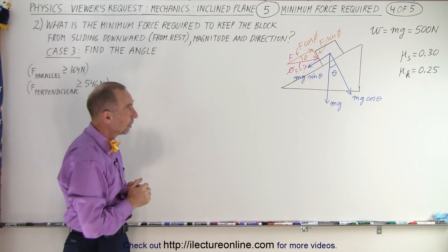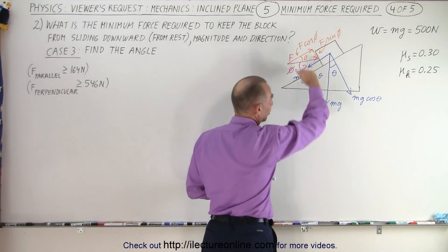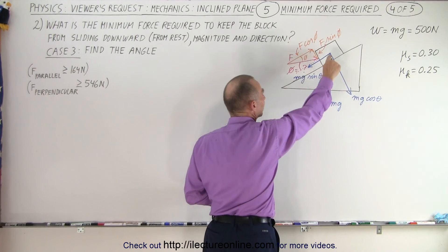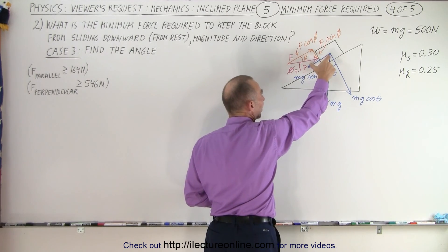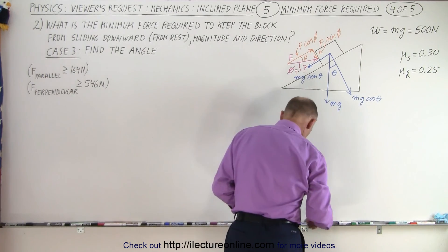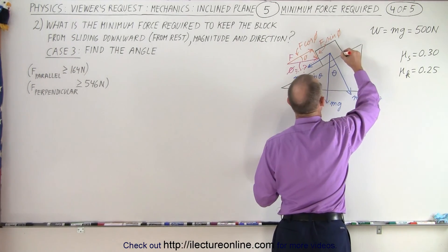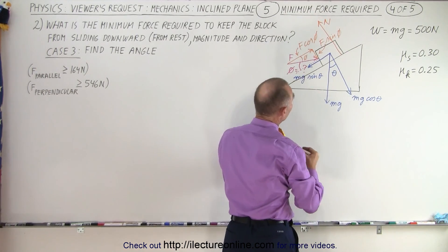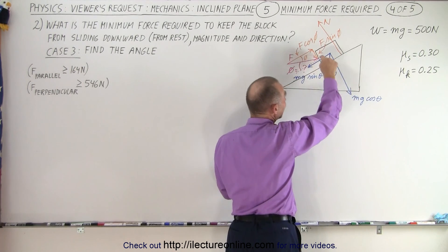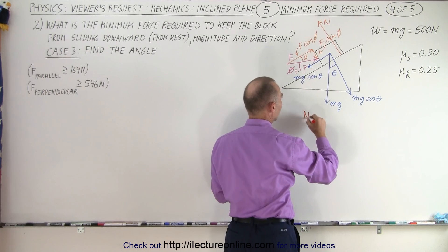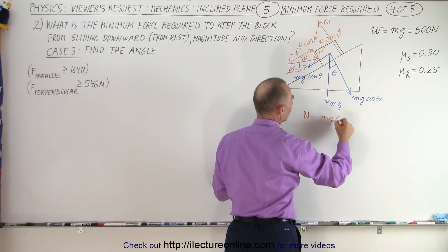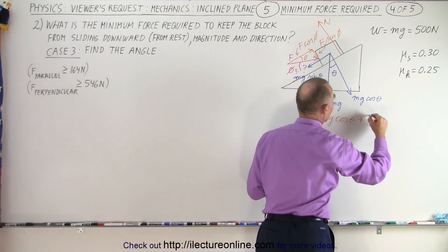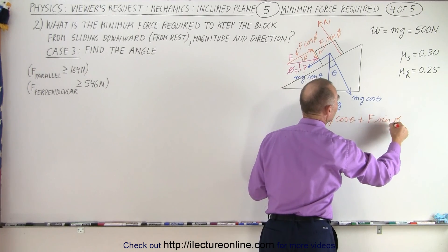So again, what we need to do here — we already put in the weight of the block, the force of the weight perpendicular to the incline, and the component of the weight parallel to the incline. Then we need the normal force. So this here would be the normal force. The normal force would be opposing those forces, so the normal force equals mg cosine of theta plus the perpendicular component of this force, which is F times the sine of phi. Notice that phi is the angle relative to the parallel of the plane, and theta is the angle of the incline.